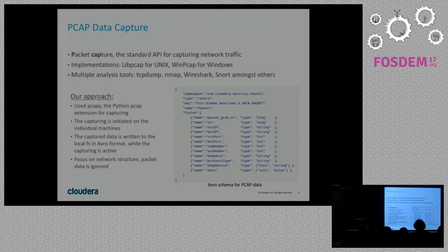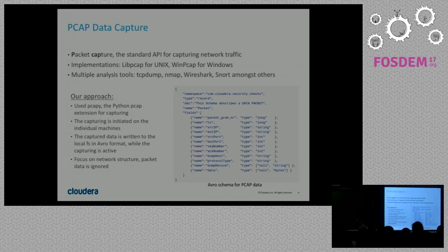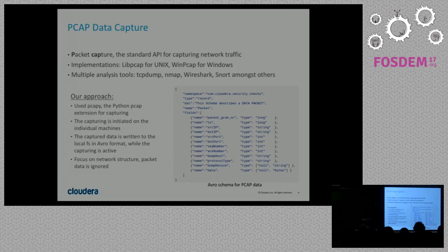We use standard packet capture data — the library implemented for both UNIX and Windows systems that tools like TCPdump, Wireshark, and Snort are built on top of. We used a Python hook for this. A couple of gotchas in data capturing: we don't want to create additional noise while capturing, so we capture it on the local machines and write it to the local file system, gathering it only after capturing has finished. We also throw away the data inside the packet itself.